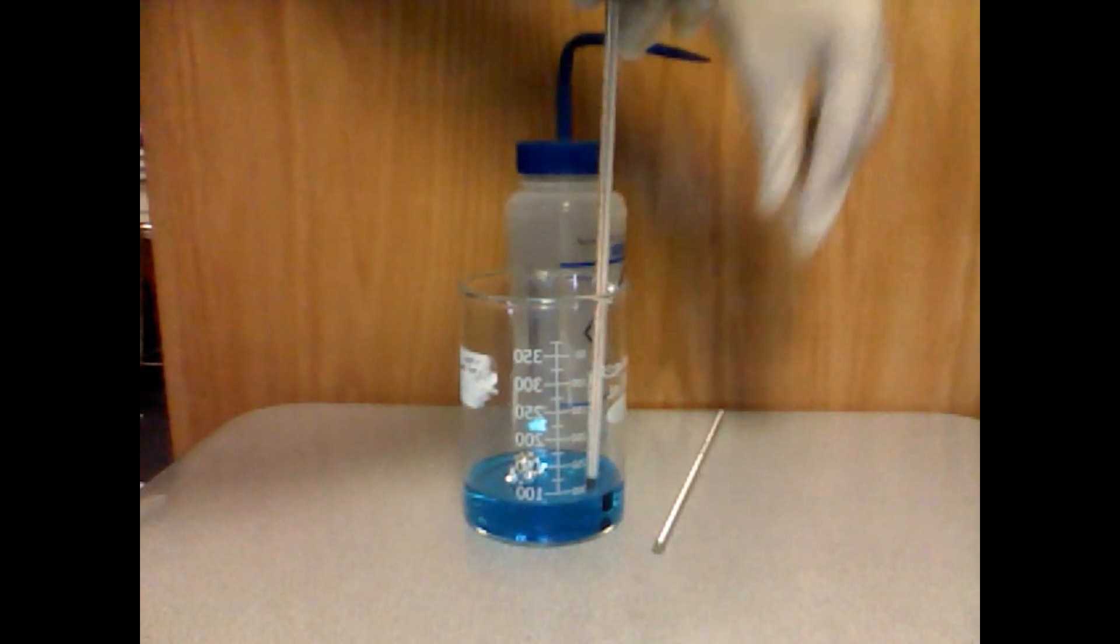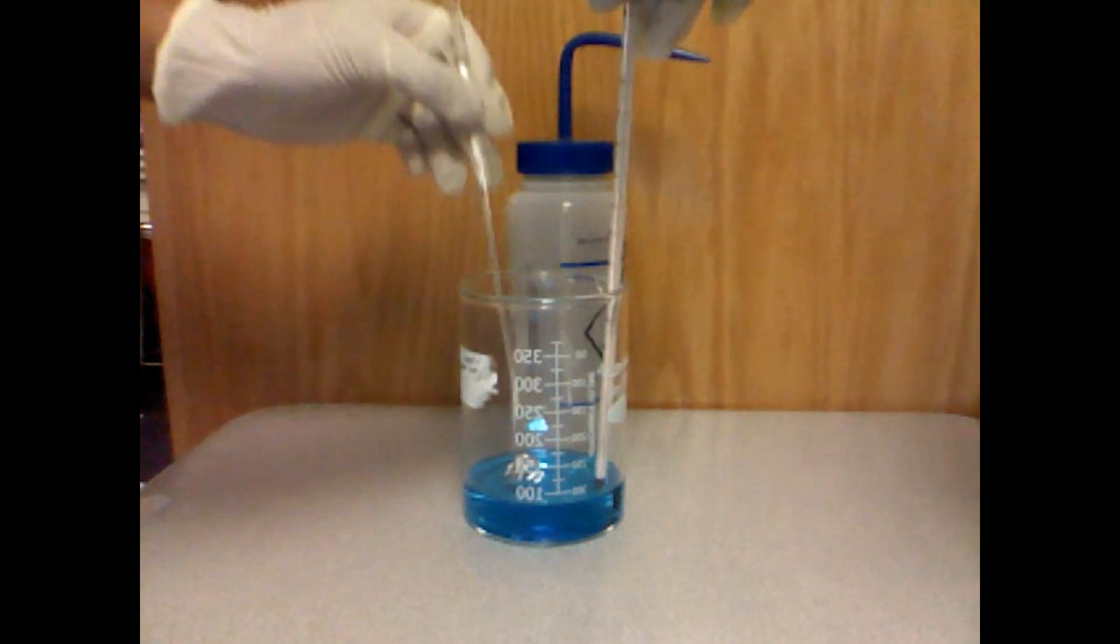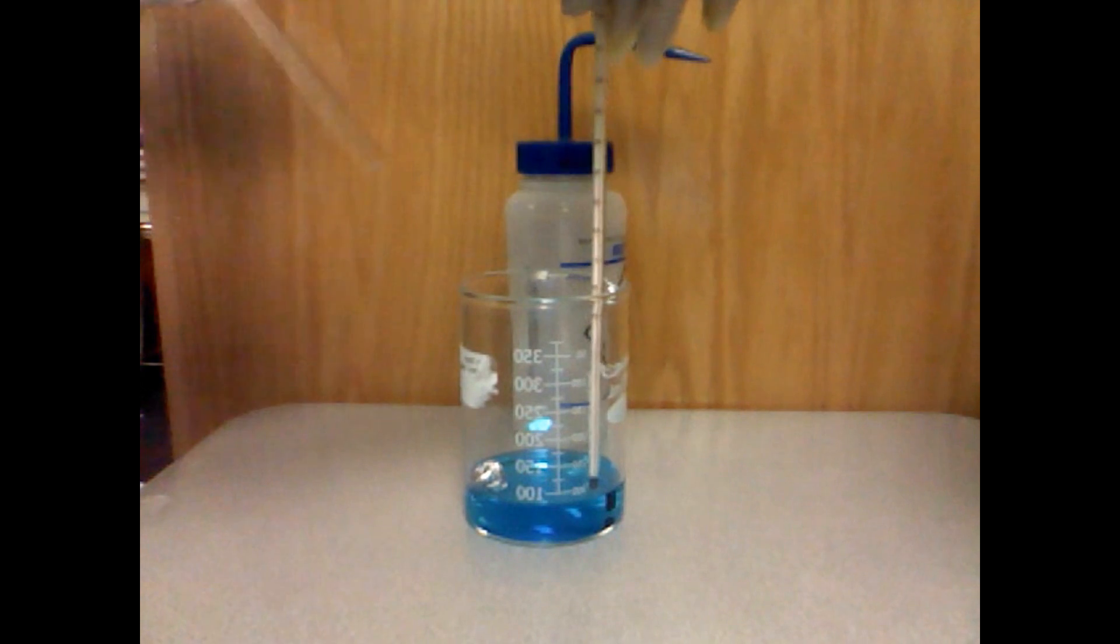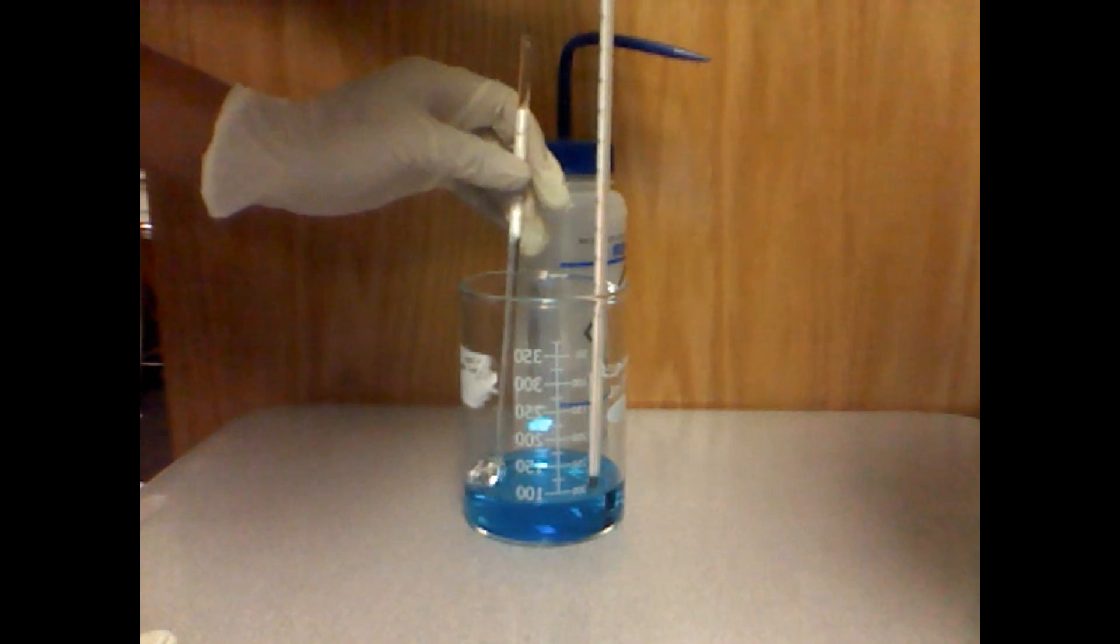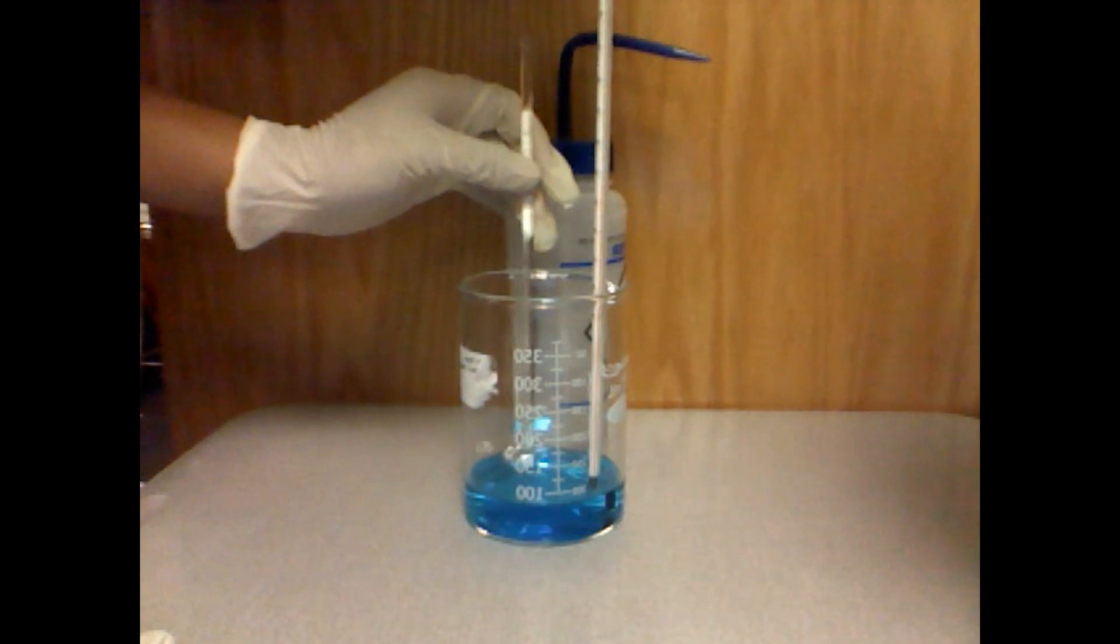Place the aluminum foil into the beaker and stir it around using the stirring rod. Watch the change in temperature and what happens to the aluminum foil inside of the solution.